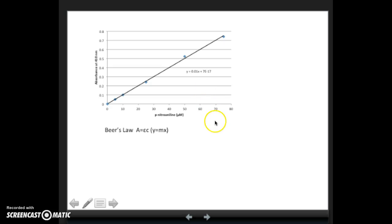You might recognize this also as Beer's Law in which the absorbance equals the extinction coefficient times the concentration. But note that this is really y equals mx, so therefore the extinction coefficient is going to be the slope of our line.